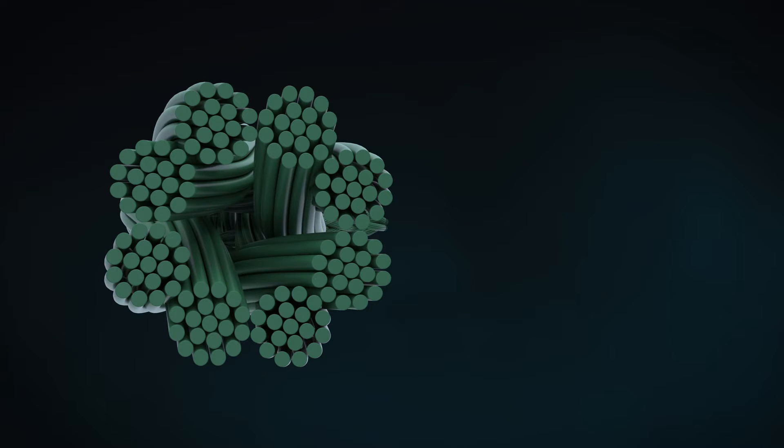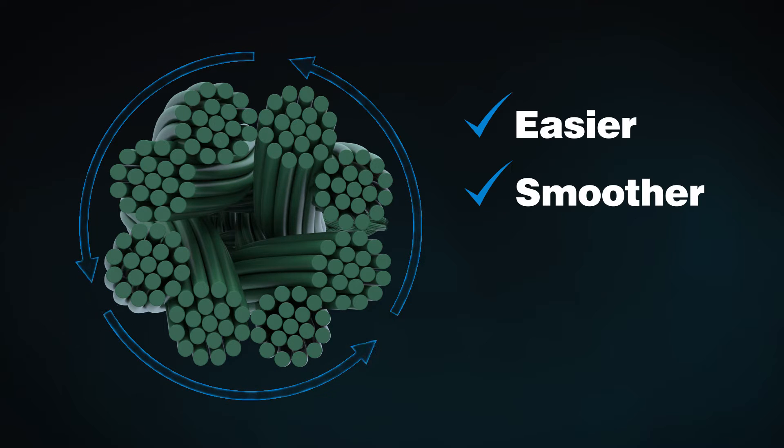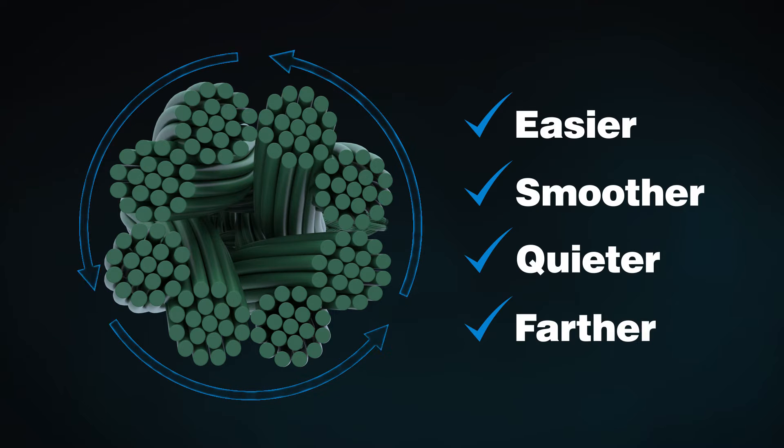XPS HyperBraid's eight woven fibers make it more round than previous lines. This allows it to cast easier, smoother, quieter, and farther than other braided lines.